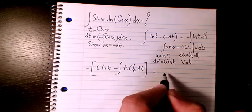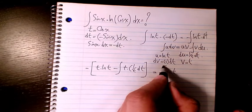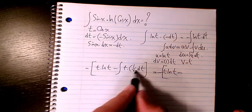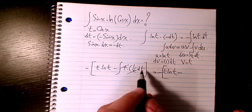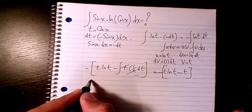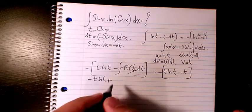So it will be negative t ln(t) minus, these two cancel out, it's going to be just dt. So integration of dt is just t, so it will be negative t ln(t) plus t, because negative times negative is positive, plus c.